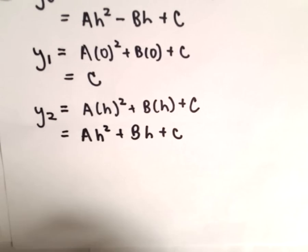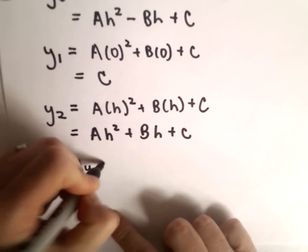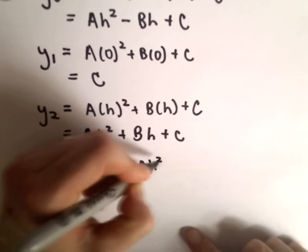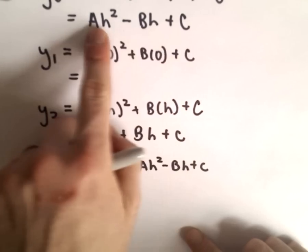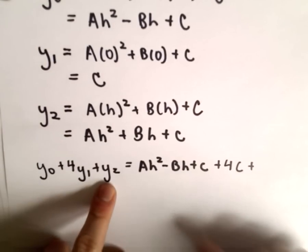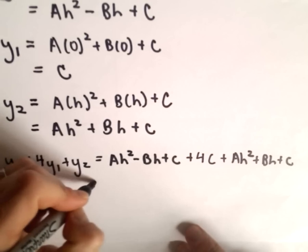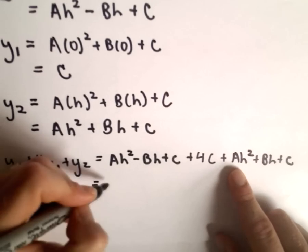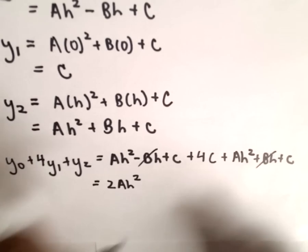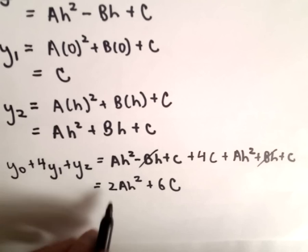Here's the key observation. If we take y₀ + 4y₁ + y₂, what do we get? We have (ah² - bh + c) + 4c + (ah² + bh + c). That gives us ah² + ah² = 2ah², the -bh and +bh cancel, and 1c + 4c + 1c = 6c. So y₀ + 4y₁ + y₂ = 2ah² + 6c.